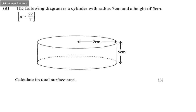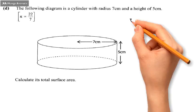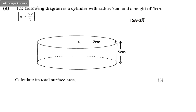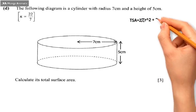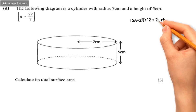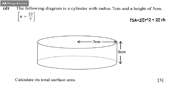The question asks us to calculate the total surface area. To calculate the total surface area of a cylinder, we use the formula: Total Surface Area = 2πr² + 2πrh.